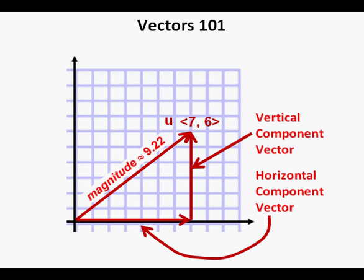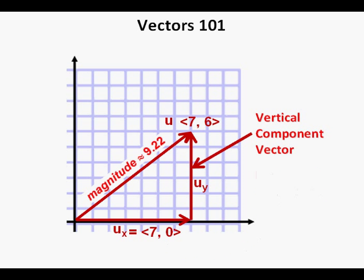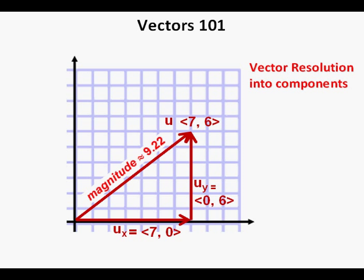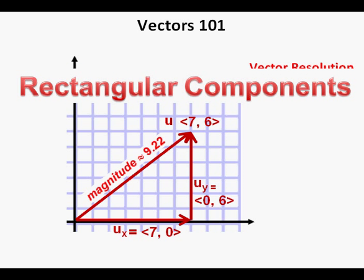This vector u can be resolved into horizontal and vertical component vectors. The horizontal and vertical components are drawn as component vectors on the horizontal and vertical axes. The horizontal component vector can be labeled u sub x, and the vertical component vector can be labeled u sub y. Using bracket numerical notation, the horizontal component is ⟨7, 0⟩ and the vertical component is ⟨0, 6⟩. What we have done here is resolve the vector into its horizontal and vertical components, also called rectangular components.